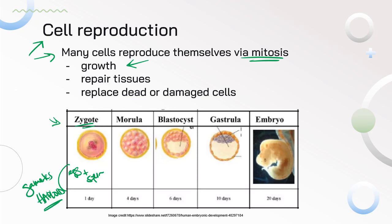Gametes are haploid cells — they only have half the DNA of our regular body cells. When those two gametes combine, we go back to the normal number of chromosomes, the normal amount of DNA. That single cell formation resulting from fertilization is called a zygote. That zygote is going to go through mitosis and we end up with more and more cells.